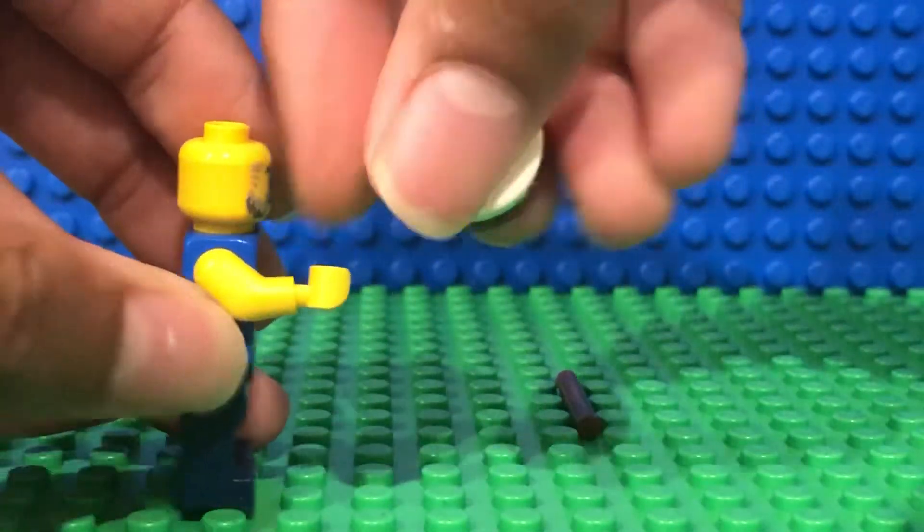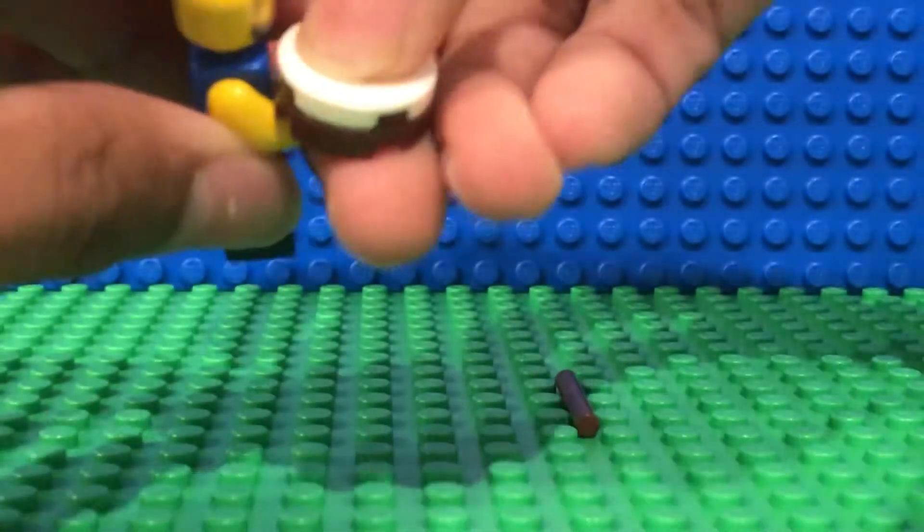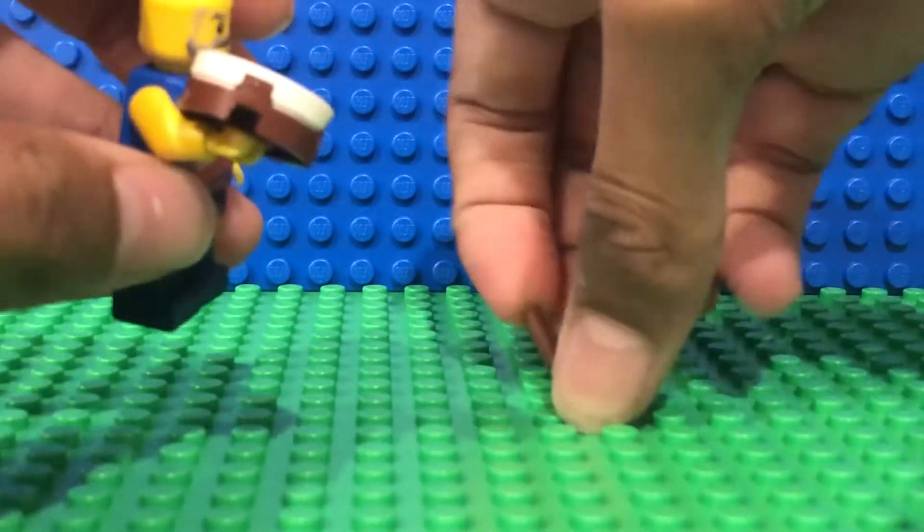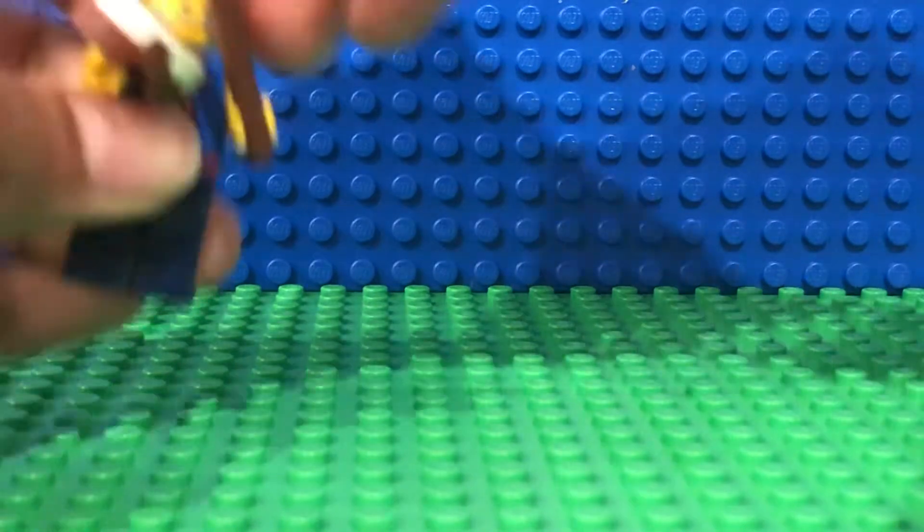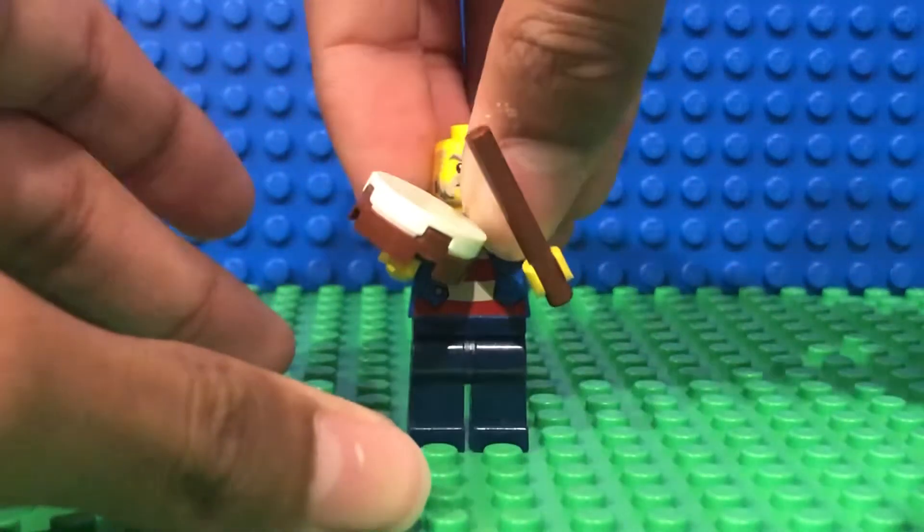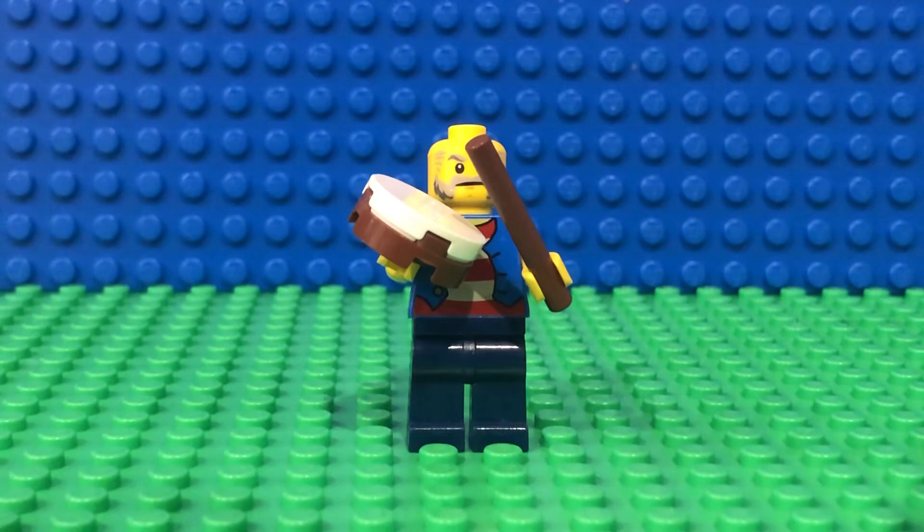Put it on top like here, then take the rod and put it in his hand. Now he has a Lego hand drum. I hope you enjoyed this video. Don't forget to subscribe, like, and share. I'll see you in my next video. Bye!